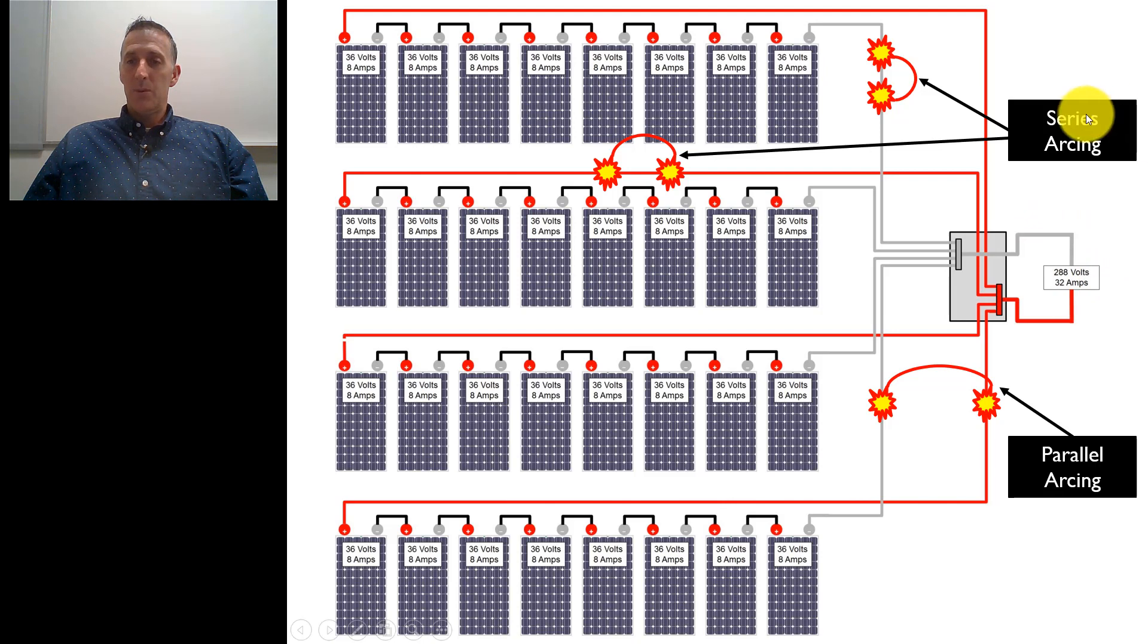You can see that we have two different types of arcs. We have a series arc, which is shown right here, one on the negative side and one on the positive side. And then we have a parallel arc here that's occurring between the negative and positive side. So to help us understand better where these arcs occur, the dangers, and why a PV system inverter that has arc fault circuit protection can detect both arcs but not necessarily stop both arcs, I want to talk about how this operates.